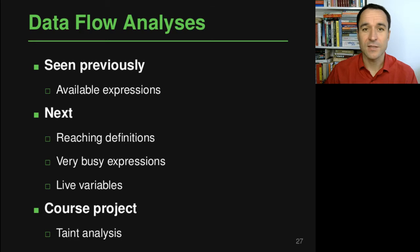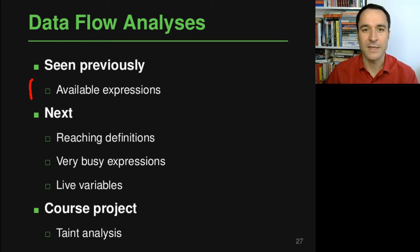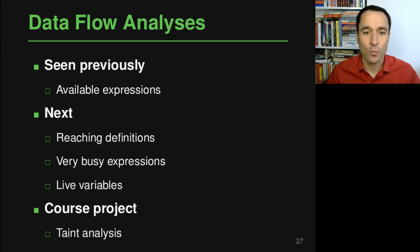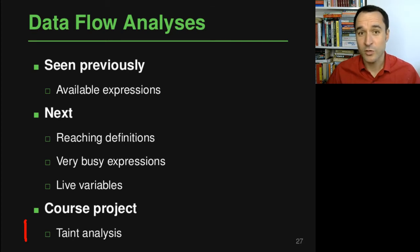Here's an overview of the data flow analyses you'll see in this course. In the first video I introduced data flow analysis with the available expressions analysis. In this video we'll look at three more examples called reaching definitions, very busy expressions, and live variables. There will also be another kind of data flow analysis — attained analysis — which is what you will implement in the course project.